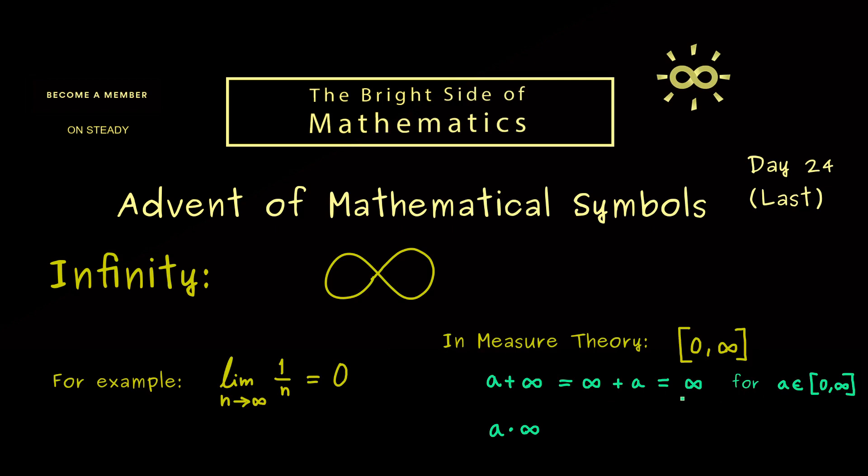And there you already see the only meaningful thing for 2 times infinity is infinity again. In fact this should be our definition for all numbers a. Including infinity. So infinity times infinity is again infinity.